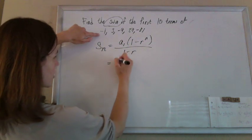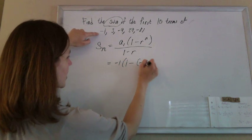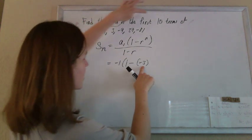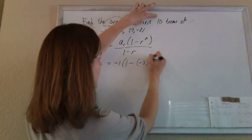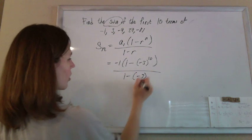The first term is negative 1 times 1 minus r, and r is negative 3. Make sure you put that in parentheses. I'm looking for the first 10 terms, so n is 10, over 1 minus r which was negative 3.